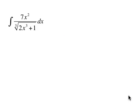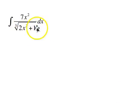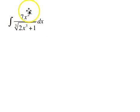Our next case is going to be the integral or antiderivative of 7x squared over the cube root of 2x cubed plus 1. This time we're going to let u equal 2x cubed plus 1, and the derivative of that looks a little bit like 7x squared — that's one condition that enables us to solve the problem.